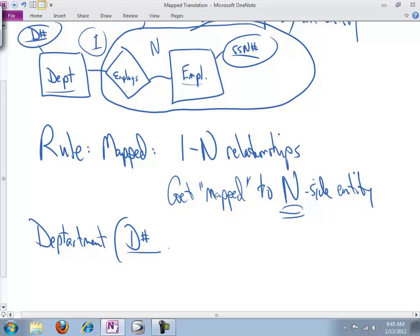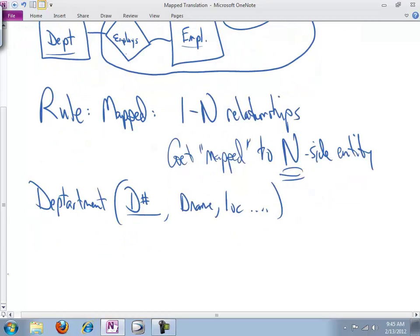That's the primary key, and whatever, dname and location and whatever else. You know, the actual meaningful, interesting attributes we want to capture.